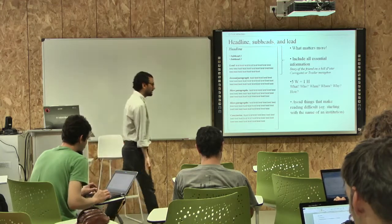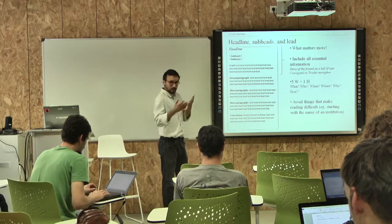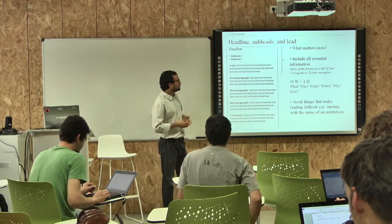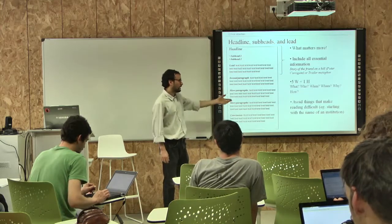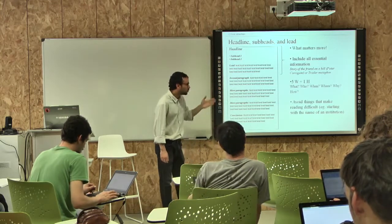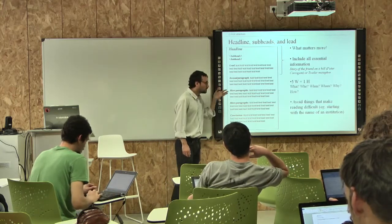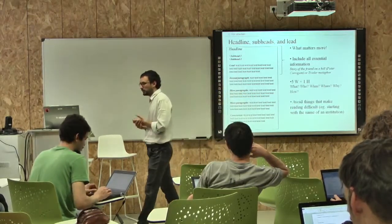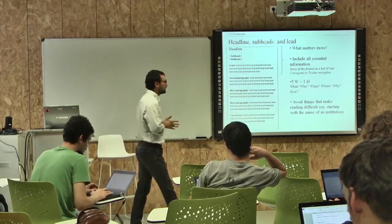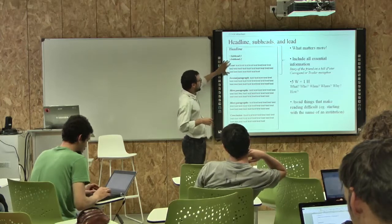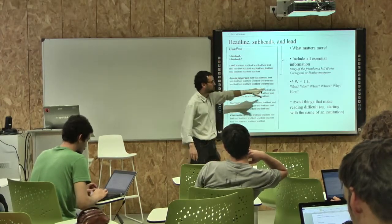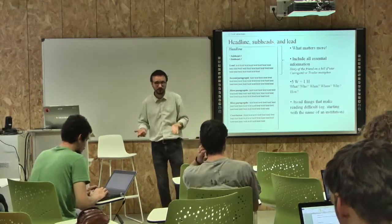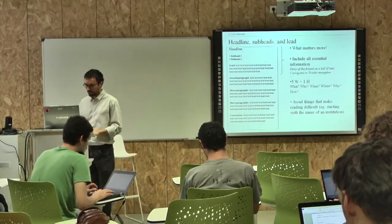Something that should certainly be included in these initial parts of the article are the famous five W's and one H: what, who, when, where, why, and how. You don't always need to answer all these questions, because sometimes the answer is trivial or not relevant. But it's a good mental check when writing the beginning of an article. For example, if you're writing a press release on a publication, you have to explain who published it, when it was published, and where.